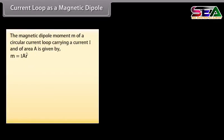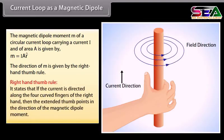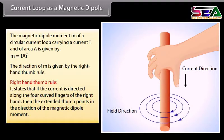Current loop as a magnetic dipole: The magnetic dipole moment M of a circular current loop carrying current I and of area A is given by M = I × A (R-hat). The direction of M is given by the right-hand thumb rule: if the current is directed along the four curved fingers of the right hand, then the extended thumb points in the direction of the magnetic dipole moment.